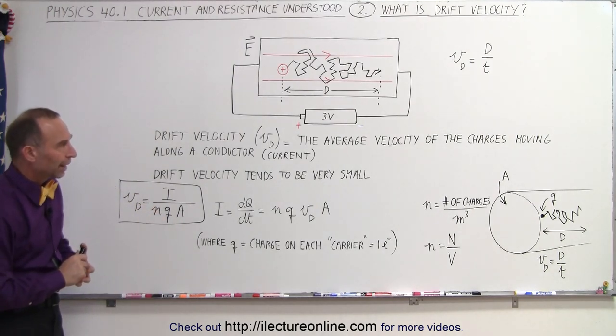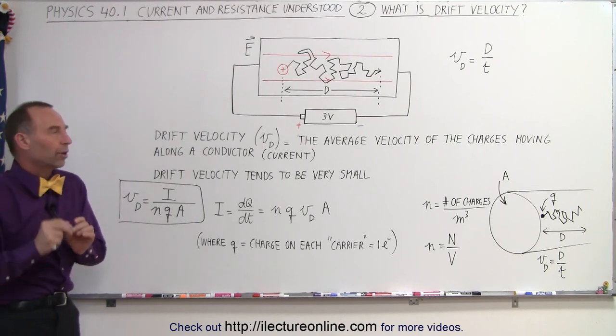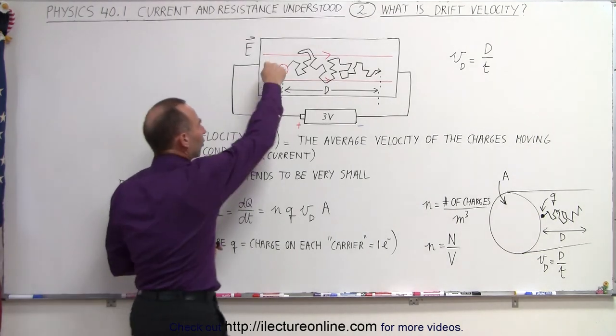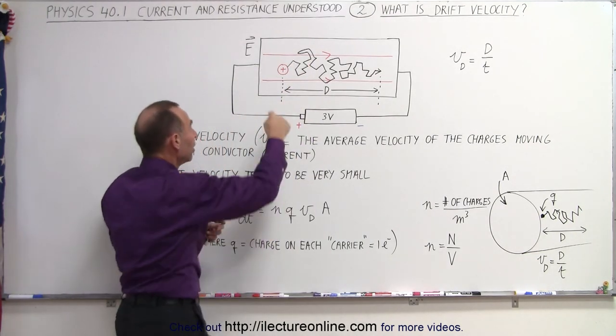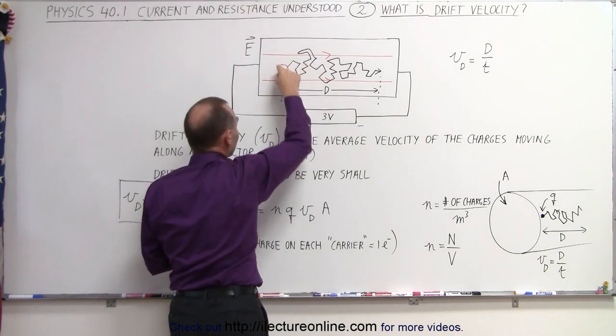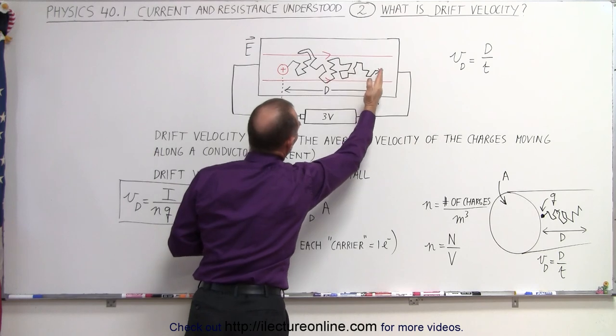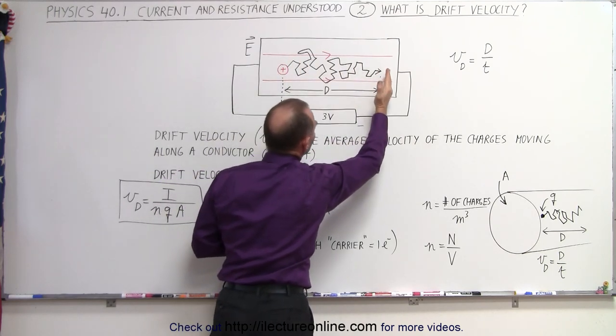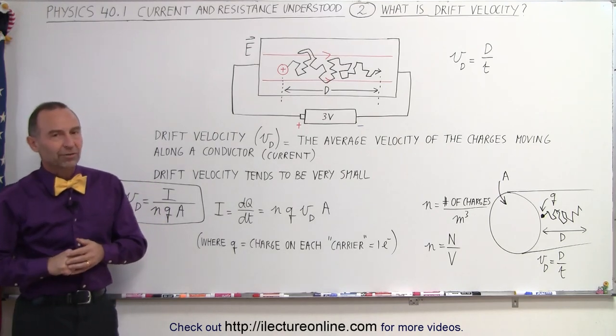And we'll show you an example of that later. But now we understand the drift velocity is not actually the actual velocity of the electrons. Electrons are moving much faster, or if we want to think of them as positive charges, the positive charges move a lot faster and cover a much greater distance. But overall, on average, they cover a small distance in the conductor itself per unit time. And that is what's known as drift velocity.